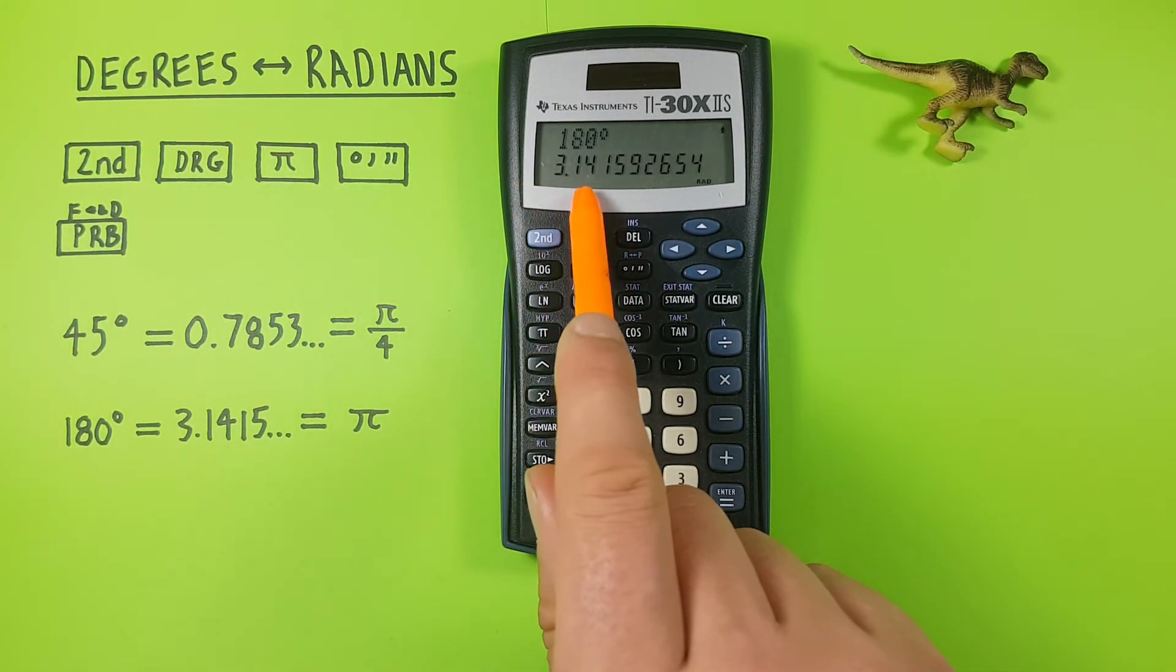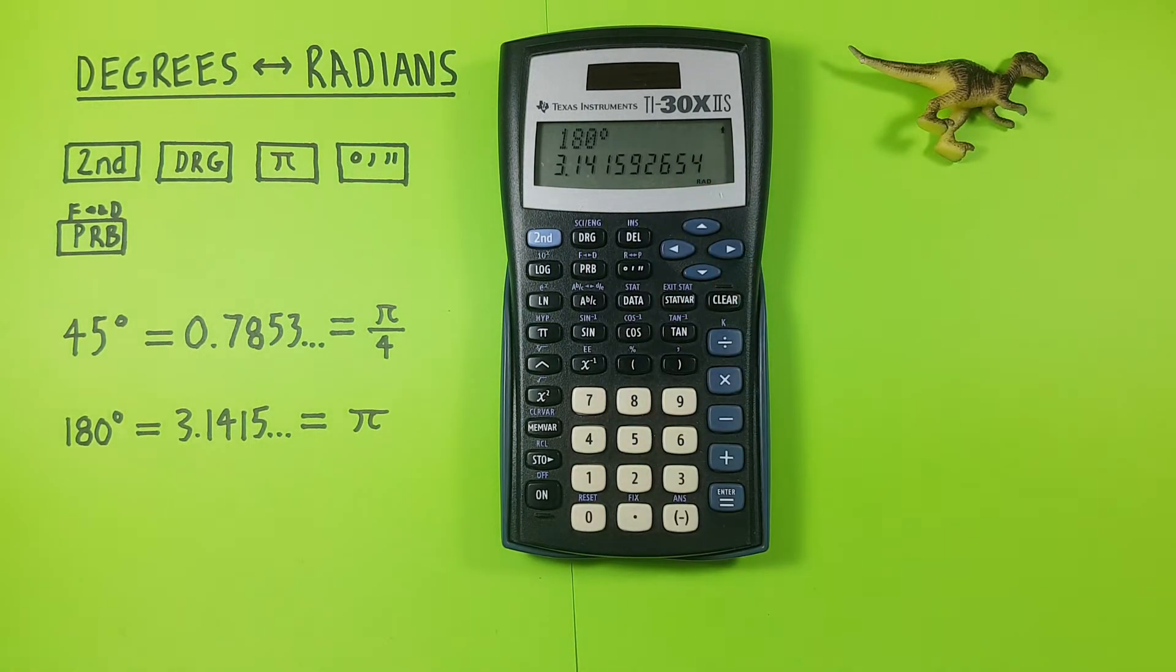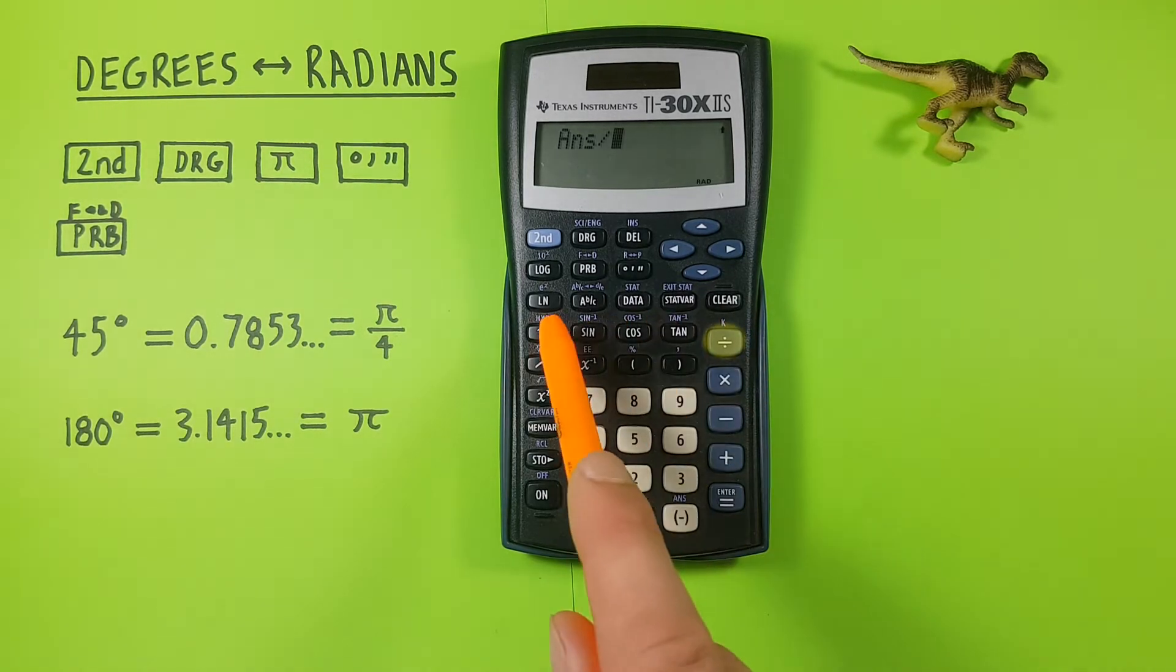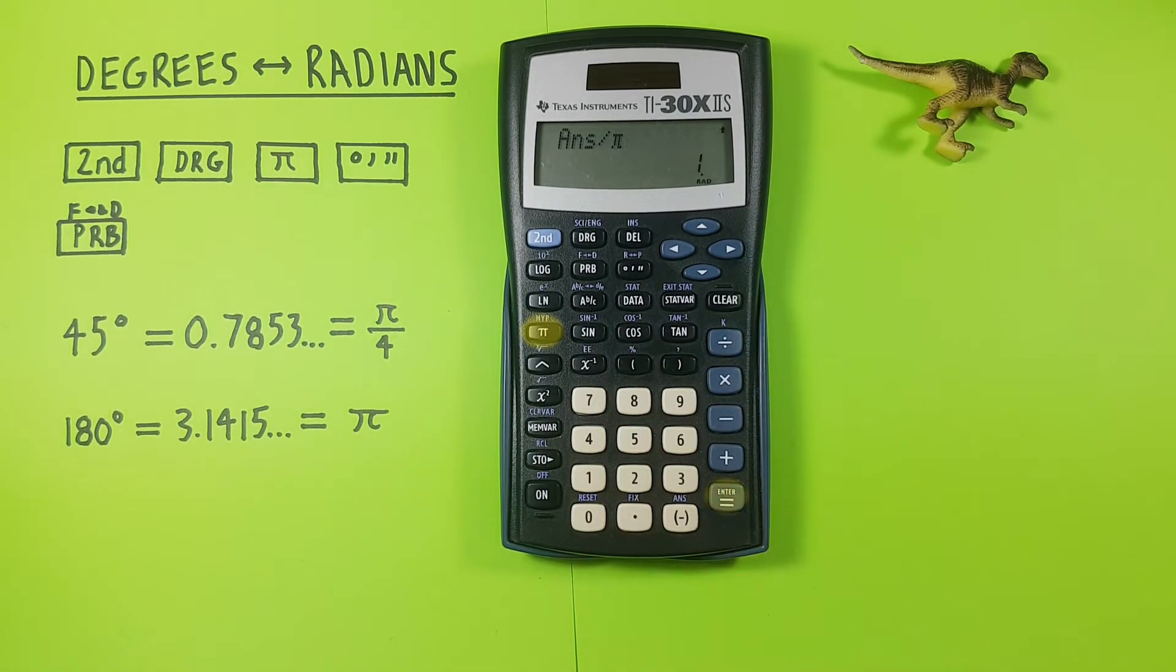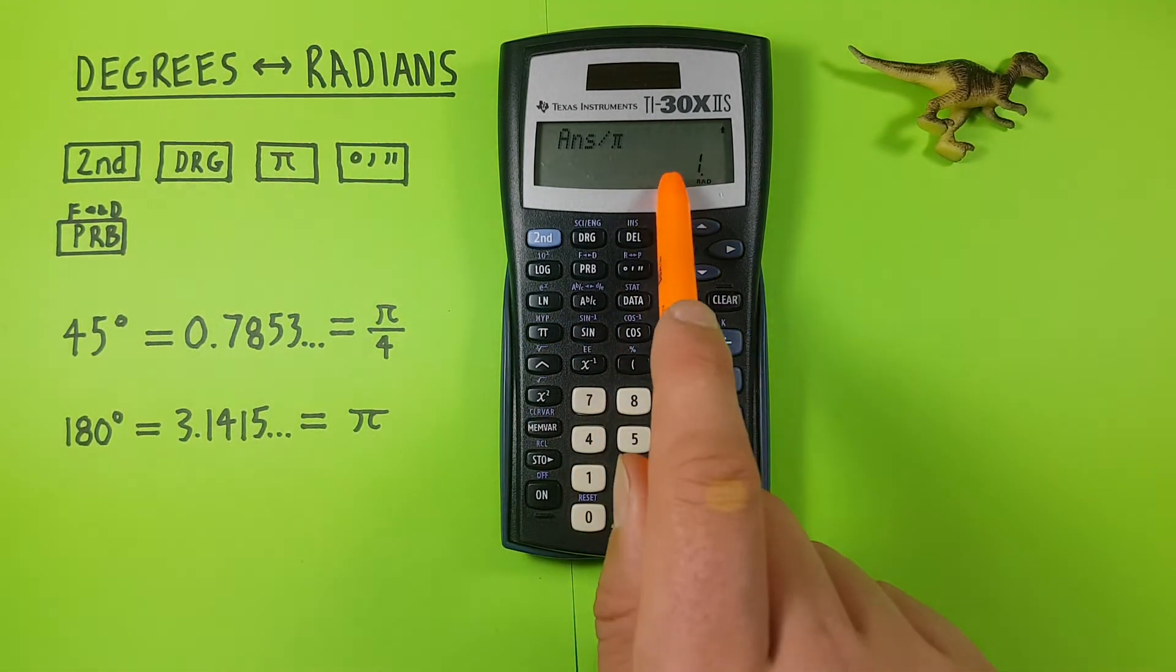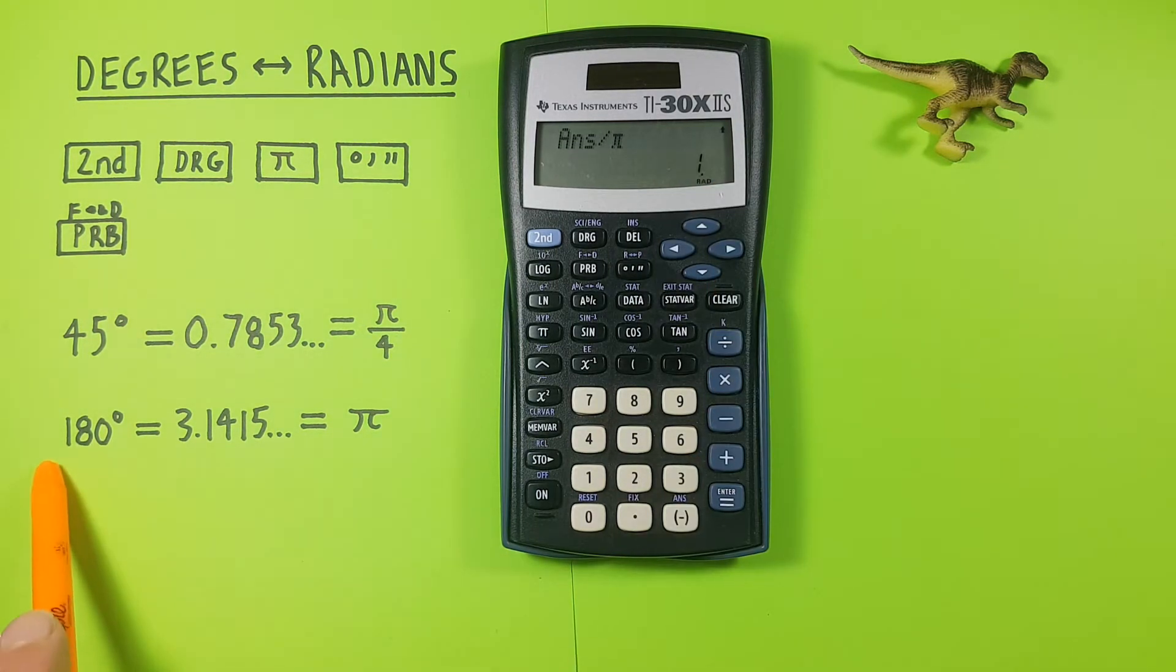and since we're in radians, just press enter again and we see this gives us our decimal again which is 3.14 etc, which should be familiar. But if it's not, we can just divide it by pi and see we get a result of 1. So 180 degrees is the same as pi radians.